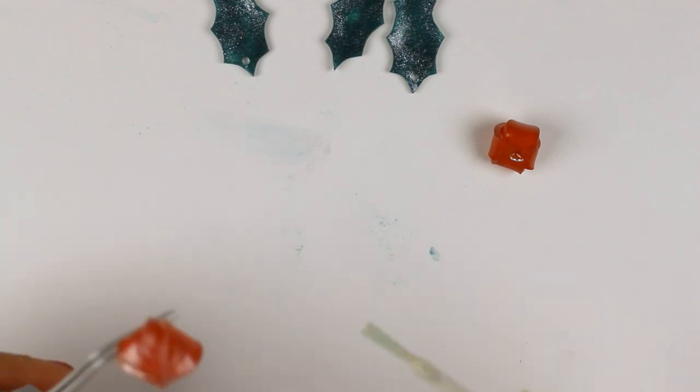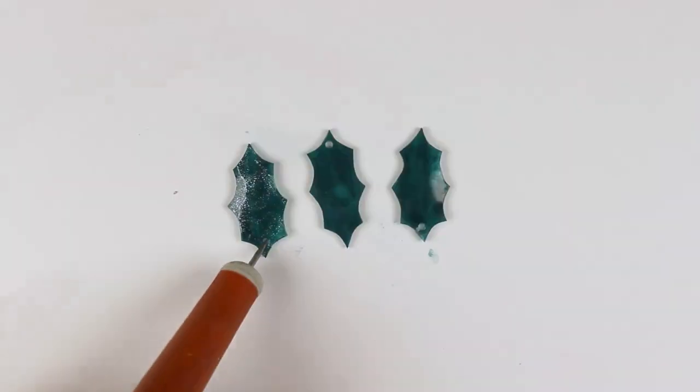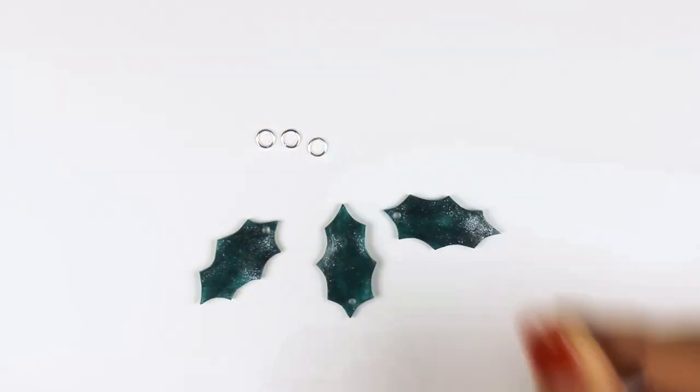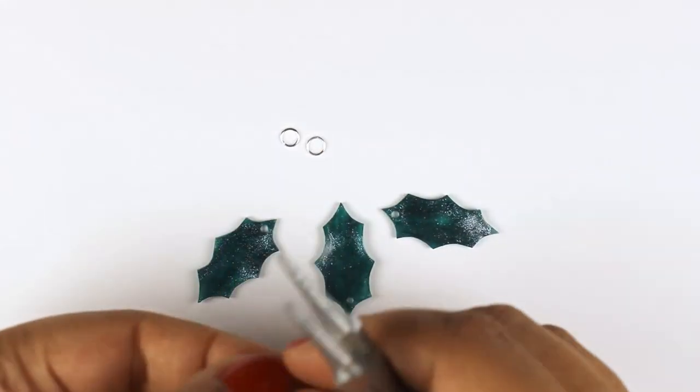I've also added the nail varnish to the berries. Once the leaves were dry, I added them to the other side as well. Now I'm going to add the jump rings to the holly leaves.